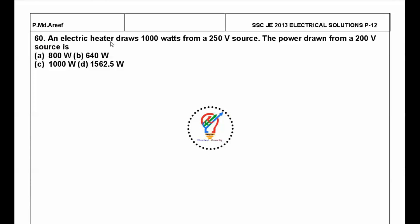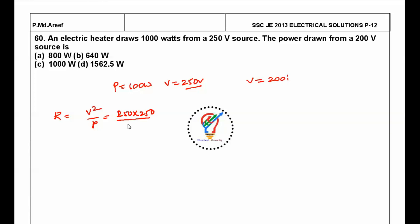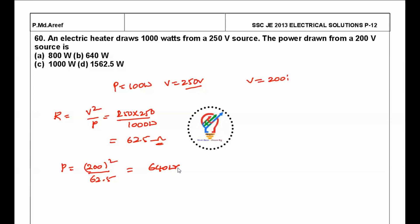Next question: an electric heater draws 1000 watts from a 250-volt supply. What is the power drawn from a 200-volt supply? First, R = V²/P = 250×250/1000 = 62.5 ohms. Now with voltage changed to 200 volts: P = V²/R = 200²/62.5 = 640 watts. So the answer is 640 watts. Thank you friends, thanks for watching my video.